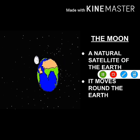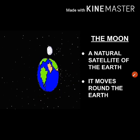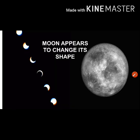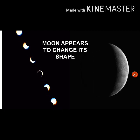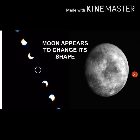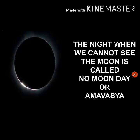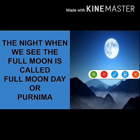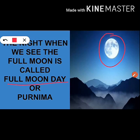The moon is a natural satellite of the earth which revolves around the earth. We can see that every day the shape of the moon appears to be changing. In reality this is not true — it seems so because of the rotation and revolution processes. There are some nights when we cannot see the moon in the sky; that night is called Numundi or Amavasya. In contrast, there are some nights when we see a full moon; that night is called full moon day or Purnima.